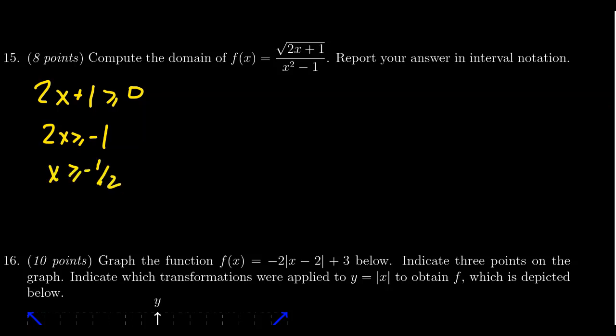So as long as x is greater than or equal to negative 1 half, then the radicand will be non-negative. And then the square root of that would be a real number. So as long as the input is greater than or equal to negative 1 half, no problems in the numerator.